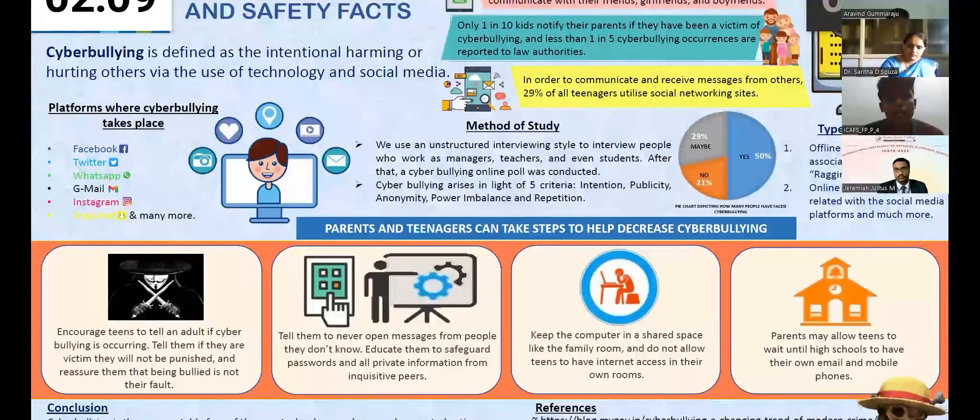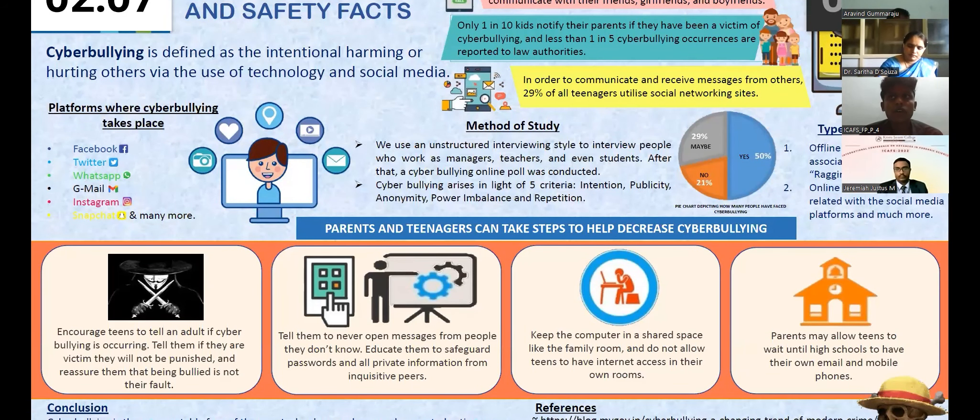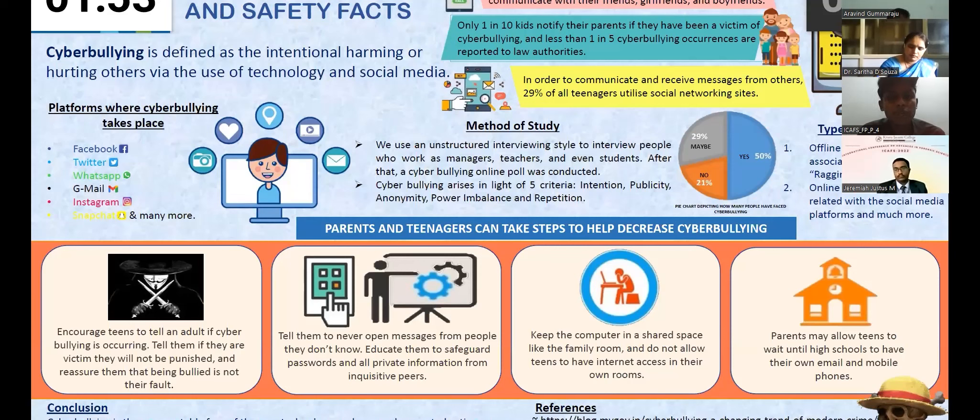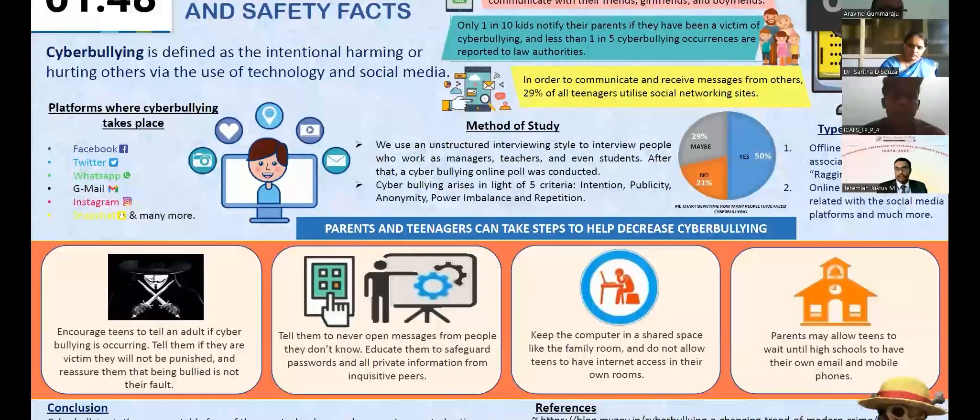As you can see, cyberbullying rises in criteria of five criteria. That is intention, publicity, anonymity, power imbalance, and repetition. As you can see in the pie chart, almost 50% of them have faced cyberbullying. 21% haven't faced and the rest 29% may have been faced with cyberbullying.